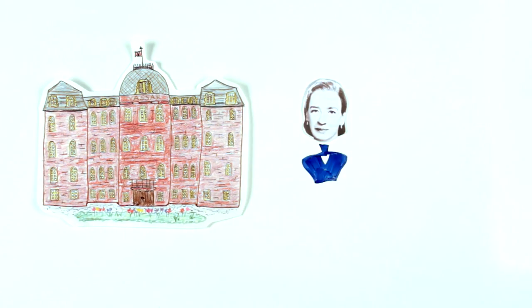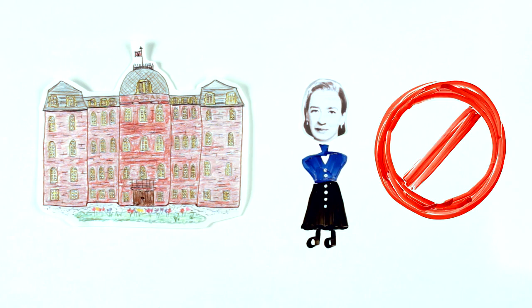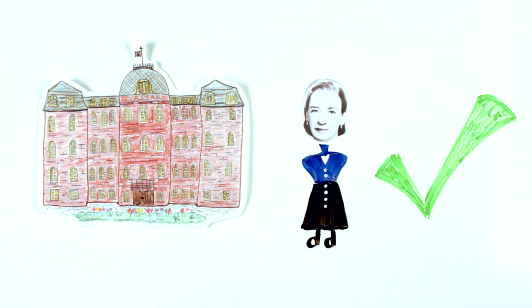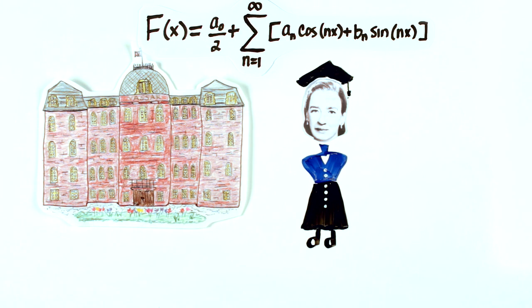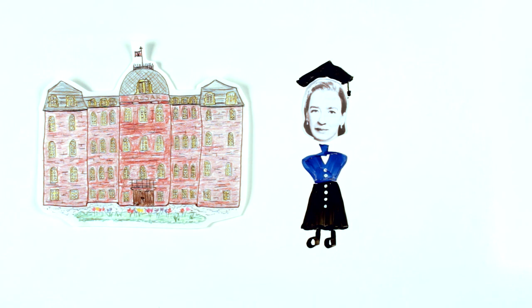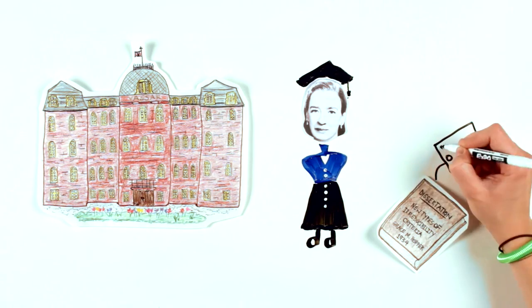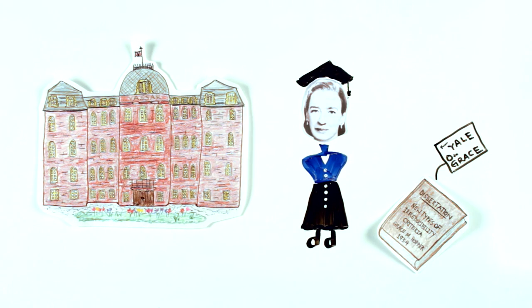Grace applied to Vassar College for early admission but was rejected. She was admitted the next year and graduated from Vassar in 1928 with a degree in math and physics. She earned her PhD in math from Yale in 1934 and returned to Vassar to teach math.